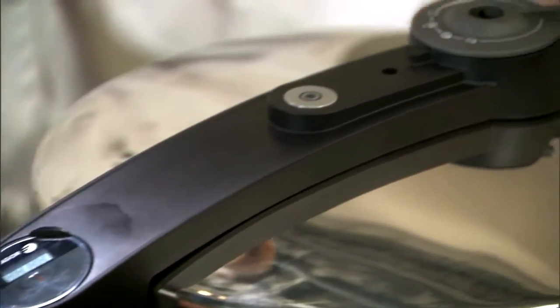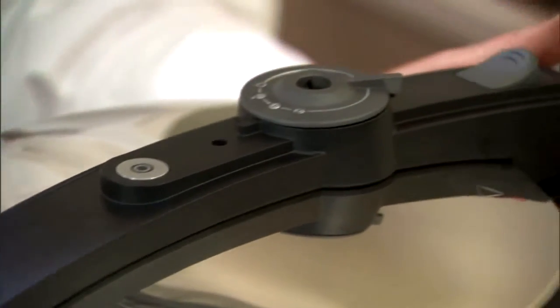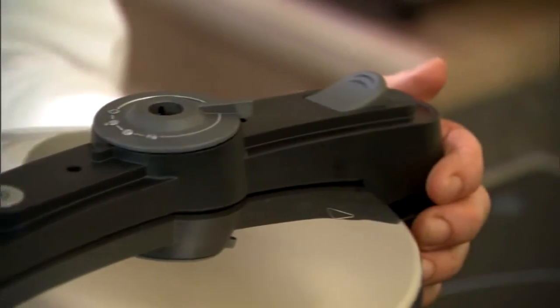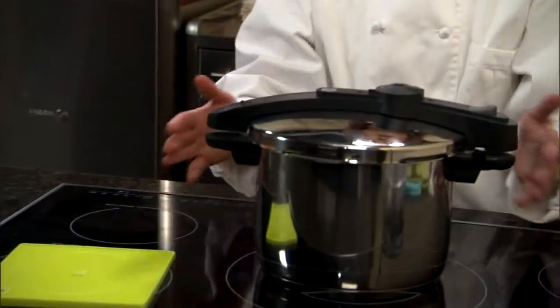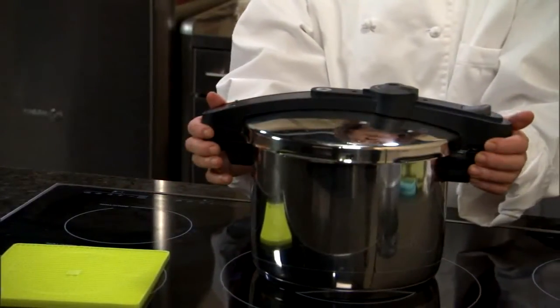Notice the handle. The handle goes across the lid, space-saving so that if you have multiple pots on your cooktop, you don't have to worry about that.